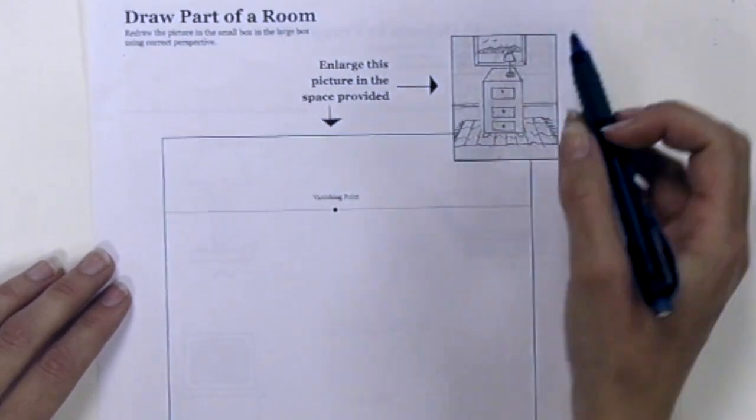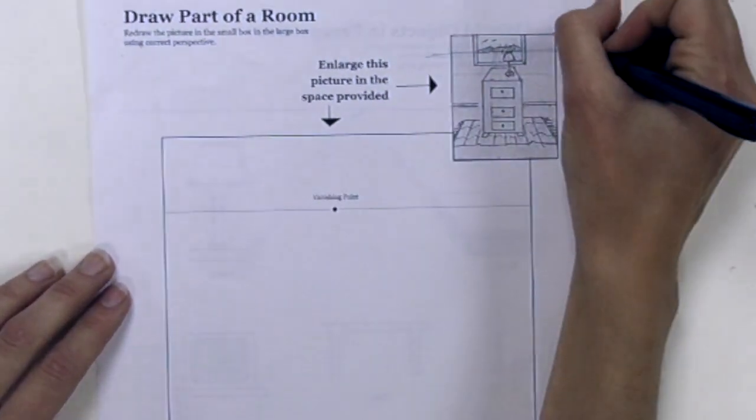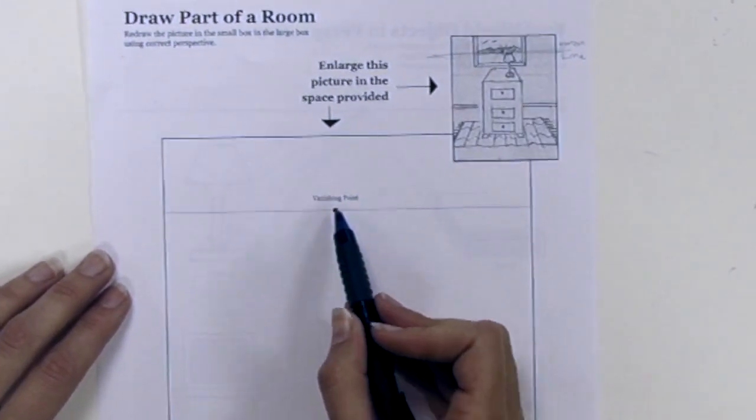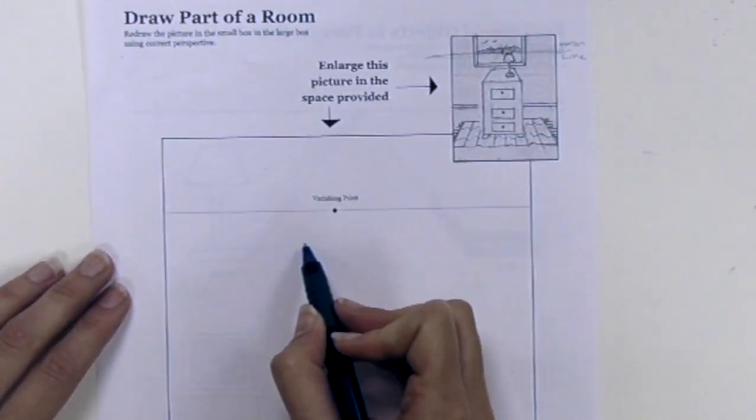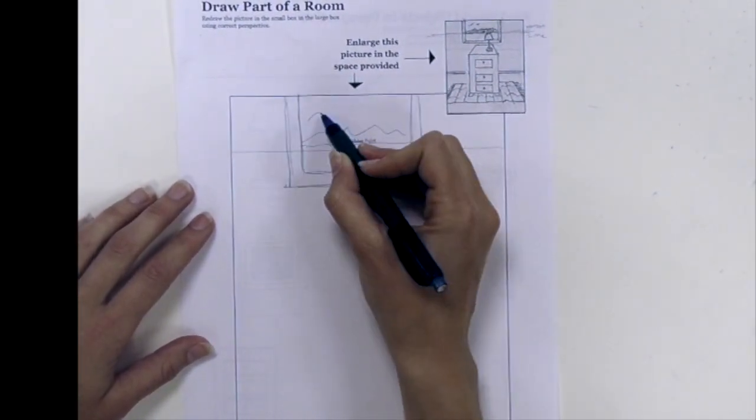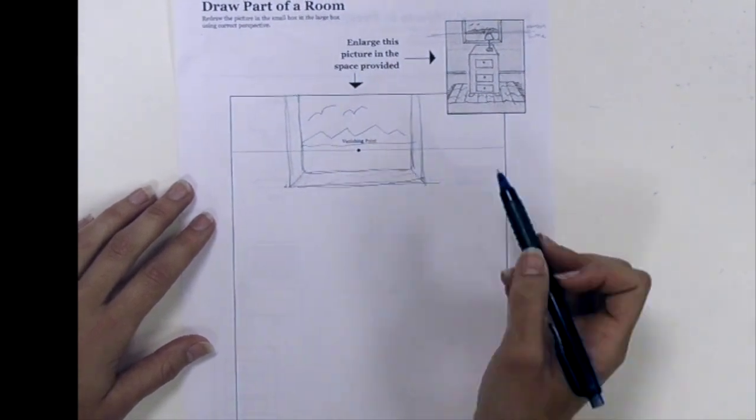You're going to be enlarging this picture. I'm trying to find the vanishing point in the original photo and the horizon line so I can transition it to the larger photo. I'm going to first draw this picture frame. There's really no perspective acting on the picture frame because it's flat on the back wall.